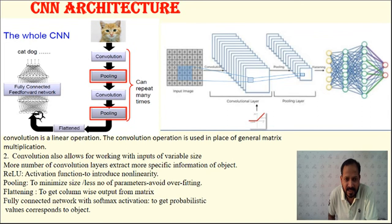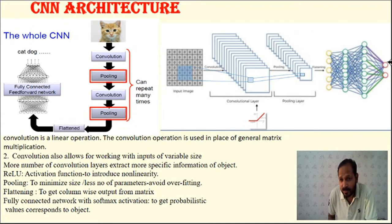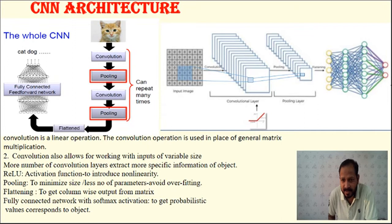After the fully connected network, we use a softmax activation to classify the input image. For example, with two classes — cat and dog — when a cat image is applied as input, the output node corresponding to cat will have a higher value than the dog node. If a dog is input, the dog node value will be larger. In this way, the network classifies the applied input.